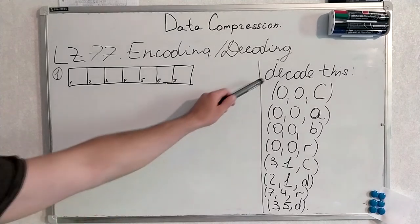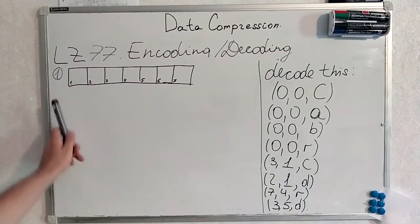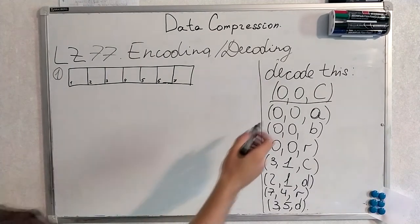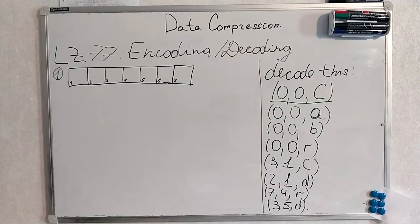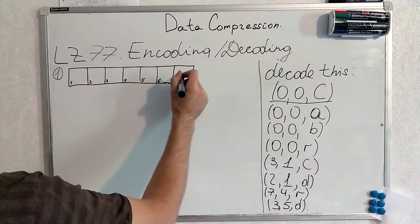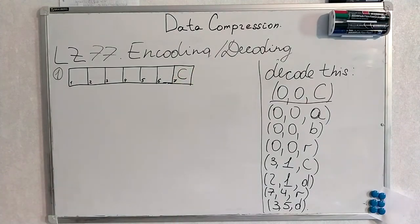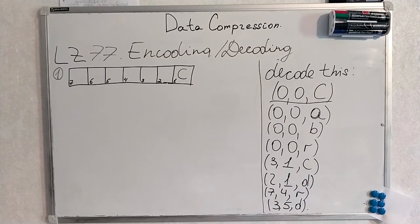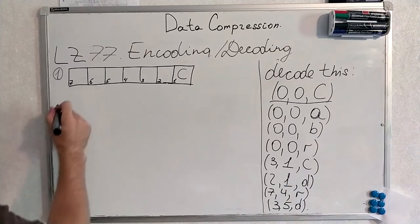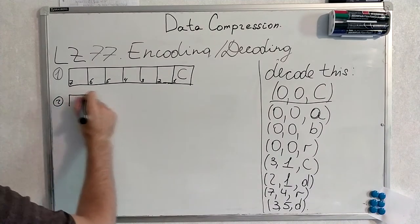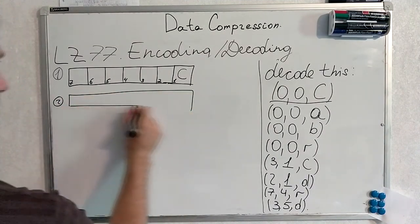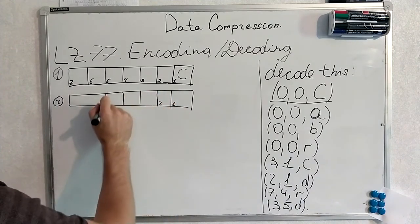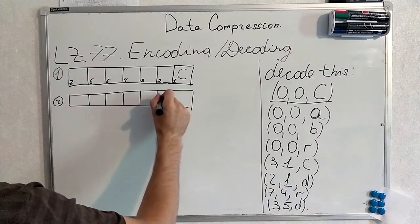This is what we are going to decode. And we will use search buffer of the length 7. On the first step this comes to us. We write it down here. Offset was 0. Length was 0. And we just added C. On the second step.